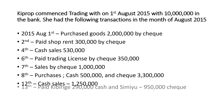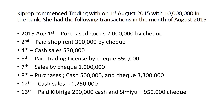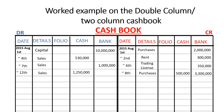On 13th August, Chibirige was paid 290,000 in cash and Simiyu was paid 950,000 by check. Both are payments, so cash reduces. We credit the cash book and post 290,000 in the cash column — the other item affected being Chibirige. For Simiyu, we credit the bank account and post 950,000 in the bank column on the credit side.